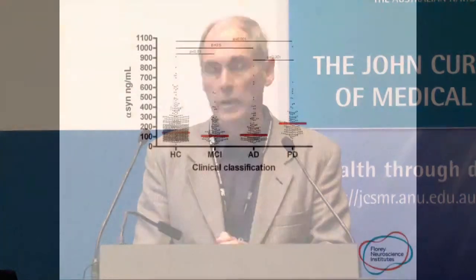Another point that helped suggest we have something disease-specific rather than a non-specific finding is when we looked at the mild cognitive impairment and AD group from the ABLE study. We found that they also had a lower level of alpha-synuclein — so this wasn't a non-specific effect associated simply with neurodegeneration — and that gave us some confidence that this was a real observation.